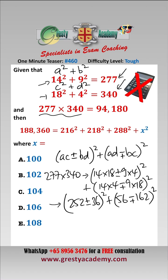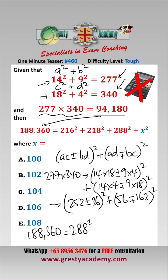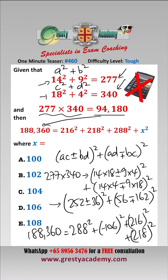Taking both possible ways: 94,180 times 2 is 188,360, so 188,360 equals 288² + 106² + 216² + 218². Since minus 106 squared is the same as 106 squared, comparing that to the expression above, clearly X is 106, which is answer D.